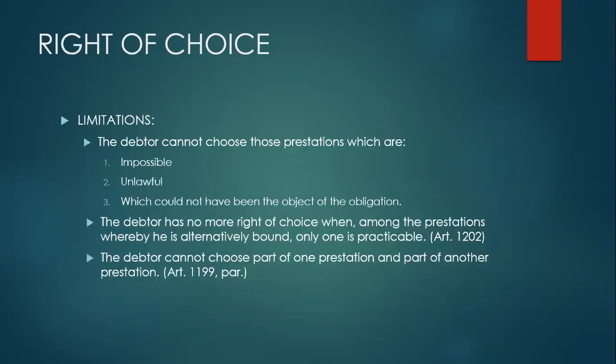But there are limitations on the right of choice. Number one, the debtor cannot choose those prestations which are impossible, unlawful, or which could not have been the object of the obligation. Another limitation is that the debtor has no more right of choice when, among the prestations whereby he is alternatively bound, only one is practical. Lastly, the debtor cannot choose part of one prestation and part of another prestation.